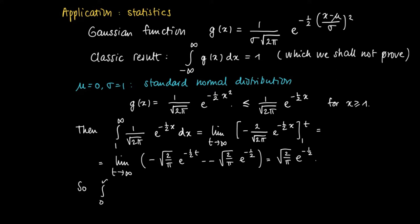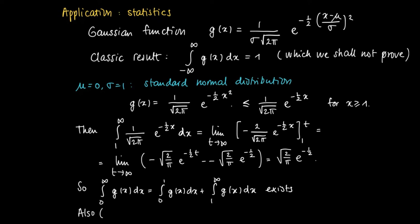The comparison theorem now says that the integral from 1 to infinity of g(x) dx also exists. In particular, the integral from 0 to infinity of g(x) dx is the sum of two integrals: the definite integral from 0 to 1 of g(x) dx, plus the improper integral from 1 to infinity of g(x) dx. The integral from 0 to 1 exists since g is a continuous function, and the second part also exists, so the integral from 0 to infinity converges.